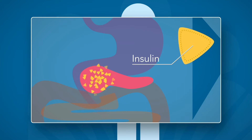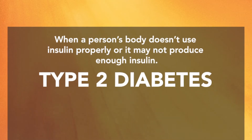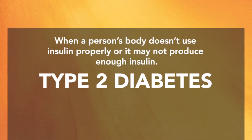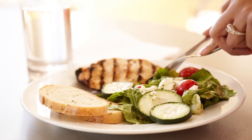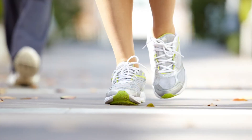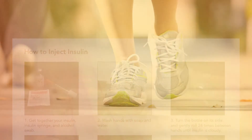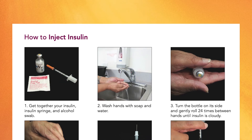Type 2 diabetes occurs when a person's body doesn't make enough insulin, or the insulin that it produces doesn't work as well as it should. This is the most common form of diabetes, with 90 to 95 percent of people with diabetes having type 2. While some people can control their blood sugars with healthy eating and exercise, others may require medications, including insulin, to help manage their blood sugars.